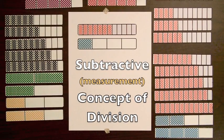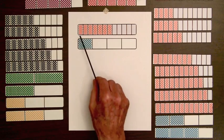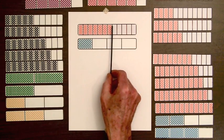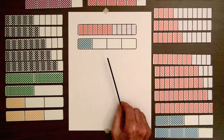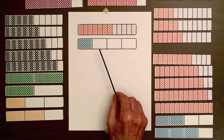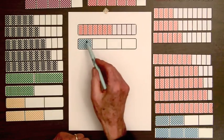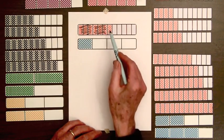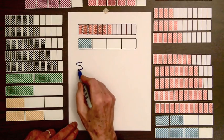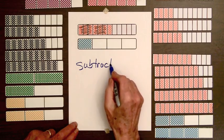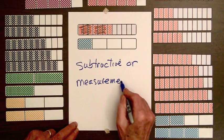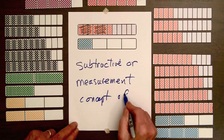In the examples in this video and in the previous video, we have determined how many times one amount fits into another. In dividing seven-twelfths by one-fourth, we see that one-fourth fits in once, twice, a little bit more than two times. This type of division can also be viewed by thinking of subtracting or measuring off one-fourth from seven-twelfths. This method of explaining division, which is what we've been using right along, is called the subtractive, or measurement, concept of division.